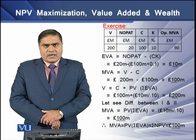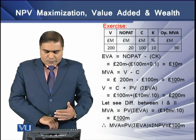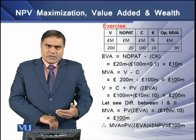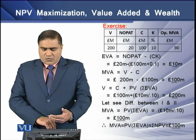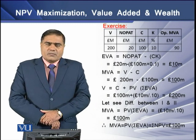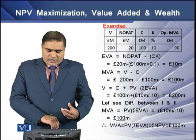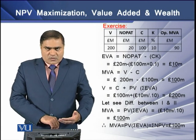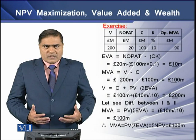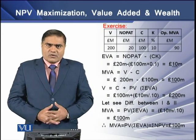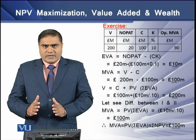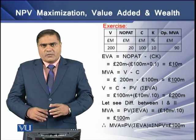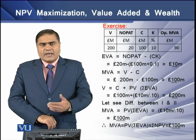Looking at the difference between equation 1 and equation 2, market value added equals the present value of EVAs, and this is again equal to the NPV. Using the present value of EVA, we have a value of 100 million. This proves that the market value added of 100 million is equal to the present value of future EVAs of 100 million, which is in turn equal to the NPV of the firm.